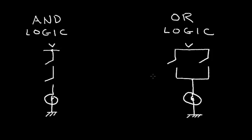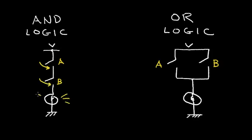Let's review AND logic and OR logic. At the left, I have a voltage, a switch A, and a switch B, and a light bulb. If this voltage is attached to the light bulb, it'll light up. Over on the right side, I have an OR structure — let's call this switch A and switch B. AND logic means that I have to close this switch AND this switch for the bulb to light up.